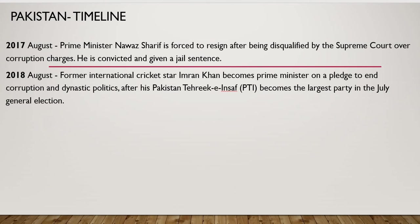In 2017, Nawaz Sharif was forced to resign after being disqualified by the court again, amid conflict between the judiciary, legislature, and executive. He was convicted of corruption charges and jailed. Elections took place again and another figure came to power — Mr. Imran Khan, the famous international cricketer, whose party Tehrik-e-Insaf became the largest party in the July elections. And till now, for two years, democracy has been functioning in Pakistan — though unstably.